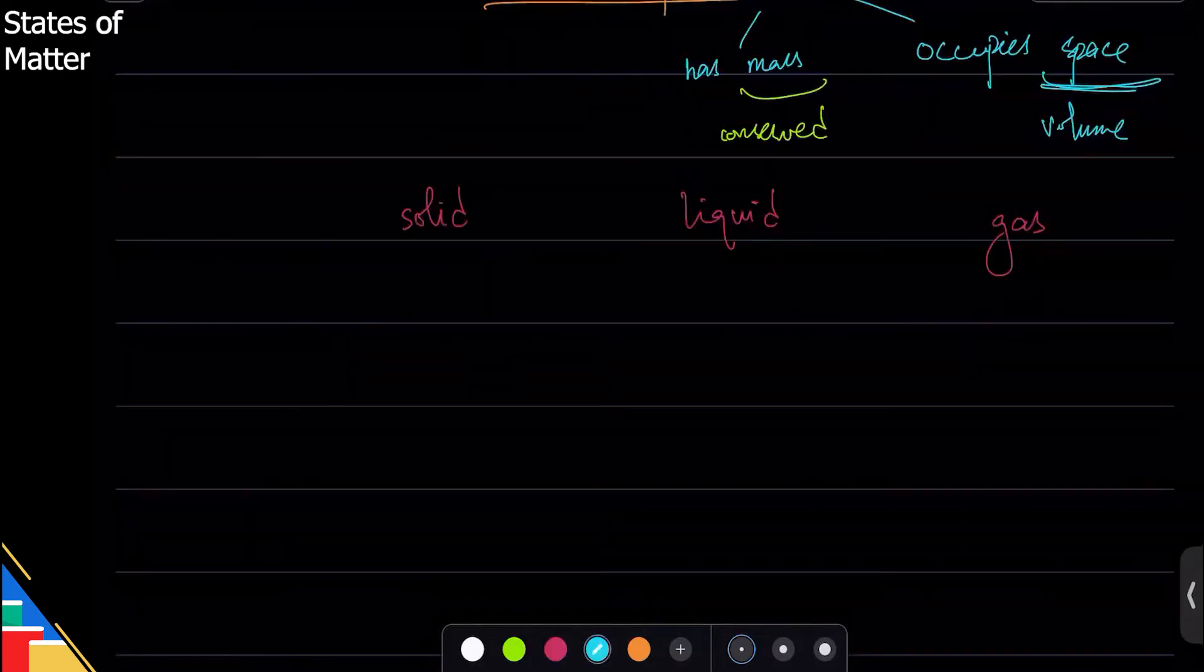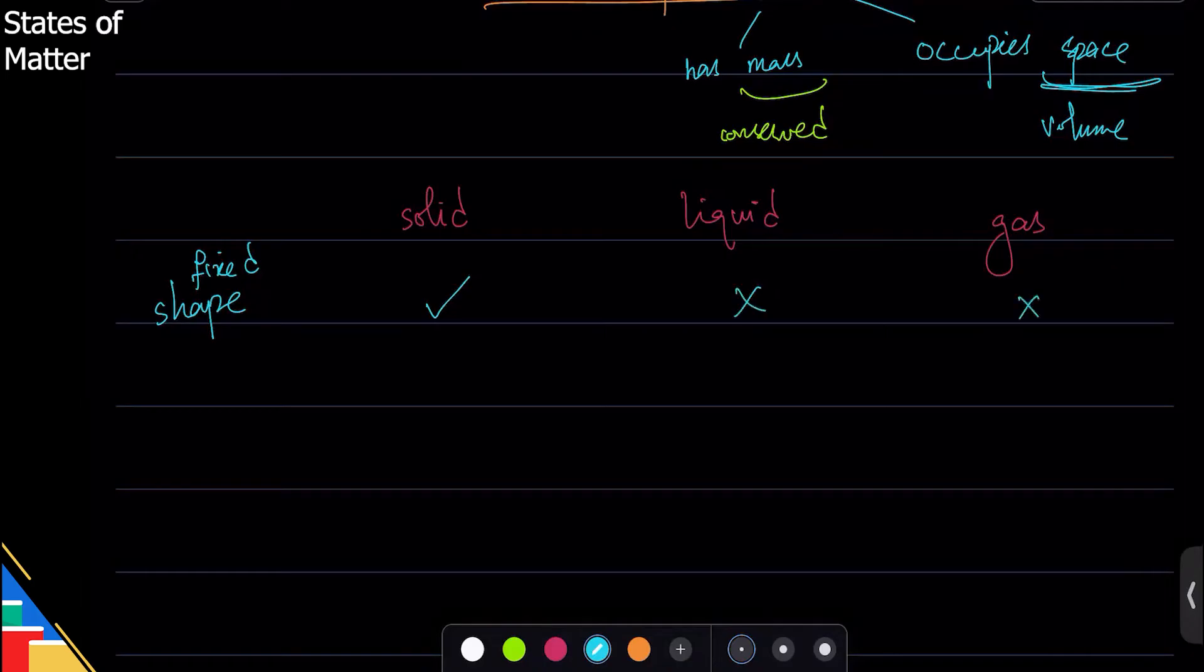Now when it comes to shape, solid has a fixed shape; gas and liquid don't. When it comes to fixed volume, because of that shape, solid has a fixed volume, liquid has a fixed volume, gas does not.